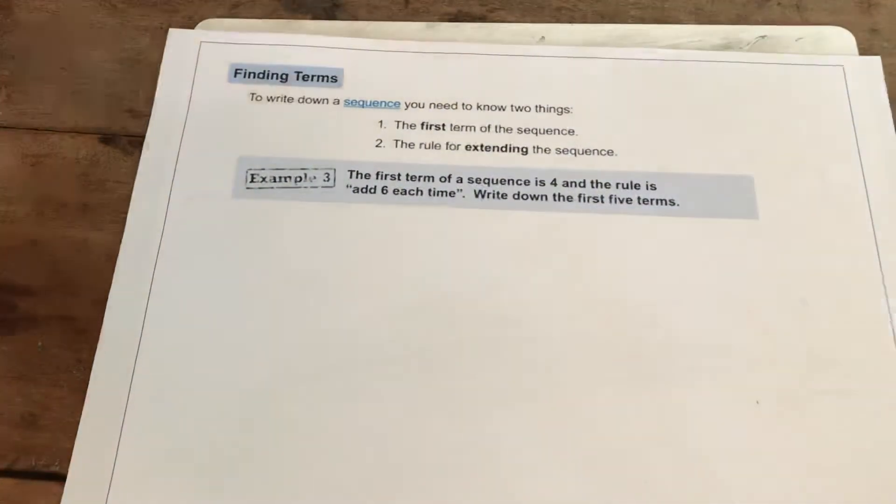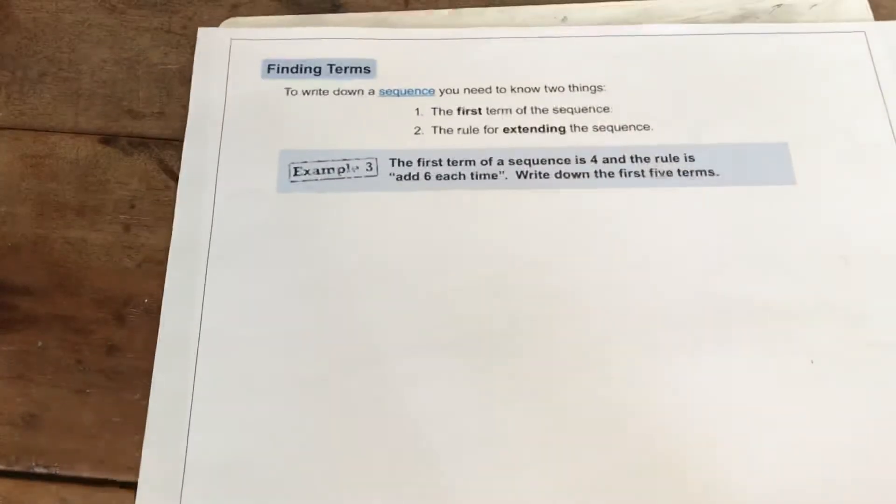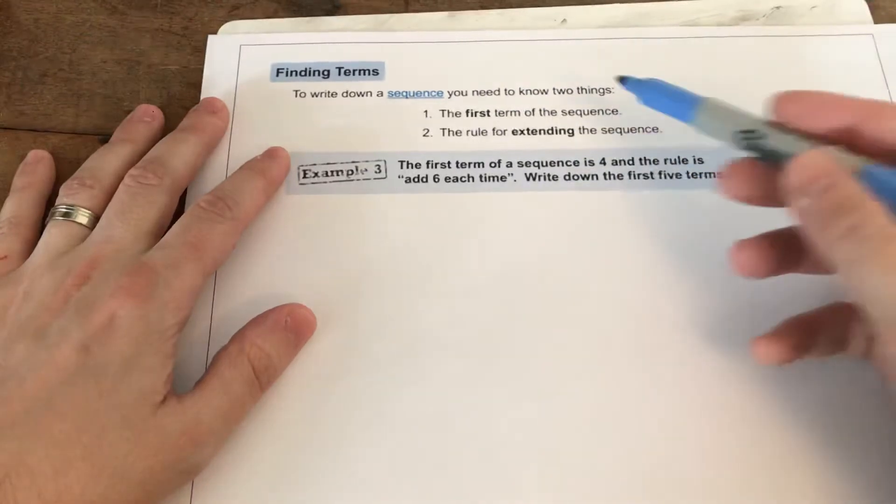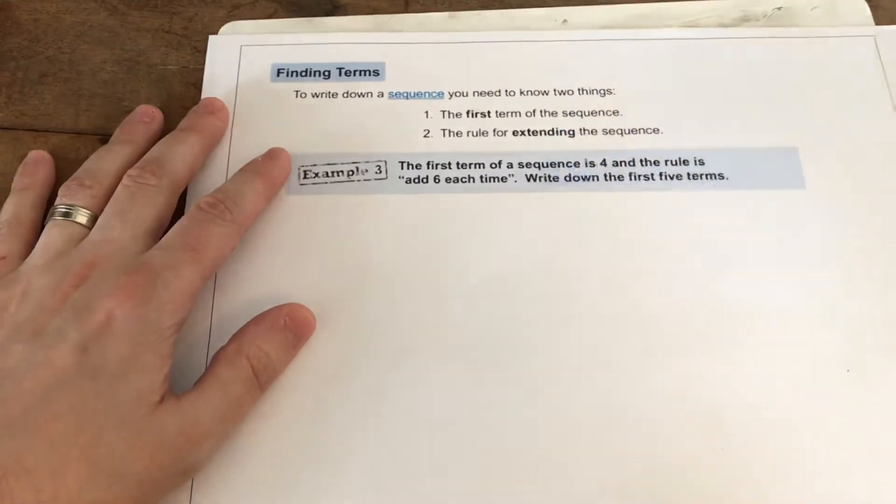So, this Knowledge Organiser looks at forming a sequence. To write down a sequence, you need to know the first term and then the term-to-term rule for extending the sequence.